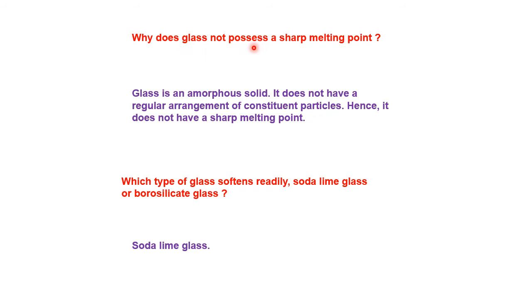Why does glass not possess a sharp melting point? First, let us understand what glass is. Glass is a mixture and glass is an amorphous solid. Among solids, we have two types: amorphous solid and crystalline solid. Crystalline solids have a regular arrangement of structure, which is called a lattice. Because of this regular arrangement, they occur as a crystalline structure.